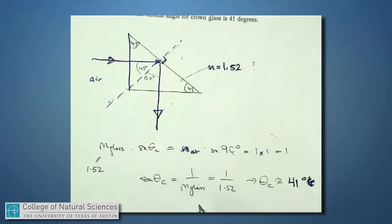So the sine of the critical angle is about 0.67 or so. If you do use your calculator and take the inverse sine, that turns out to have a critical angle of about 41 degrees.